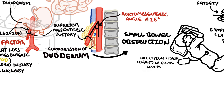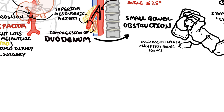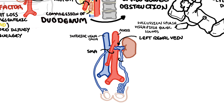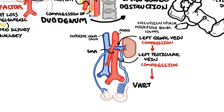Another presentation of superior mesenteric artery syndrome can occur when the superior mesenteric artery compresses the left renal vein, which normally drains into the inferior vena cava. Left renal vein compression can affect the left testicular vein, which normally drains into the left renal vein. This causes congestion in the renal vein and the left testicular vein, resulting in what is called a varicocele — a painful testicular enlargement due to congestion of the venous plexus.